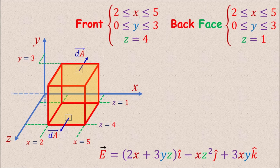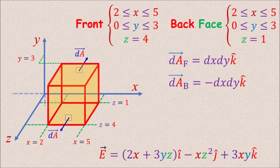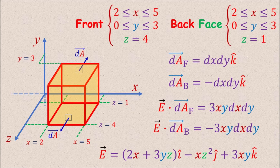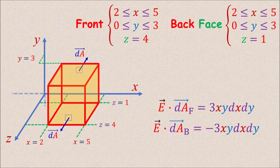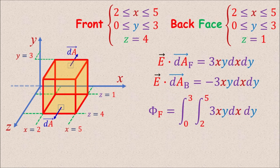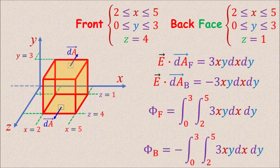For the front and back faces, both cover the same range for x and y. The front face is at z equal to 4 meters and the back face is at z equal to 1 meter. The dA for the front face is dx dy k-hat and for the back face is negative dx dy k-hat. The z component of the E field does not depend on z, so it is the same on both faces. Therefore E dot dA for the front face is 3xy dx dy and for the back face is negative 3xy dx dy. The flux out through the front equals the flux in through the back, so the net outward flux contribution from these two faces is zero.